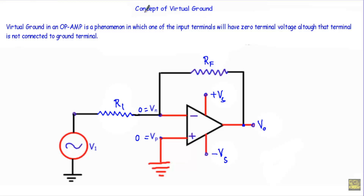In this video I will talk about the concept of virtual ground, after that I will show you a circuit simulation so that you have a better idea of this concept. Virtual ground in an op-amp is a phenomenon in which one of the input terminals will have zero volts, although that terminal is not connected to the ground terminal.